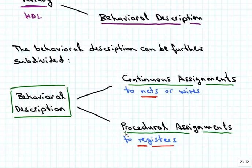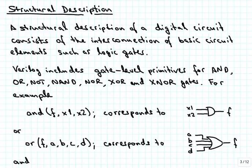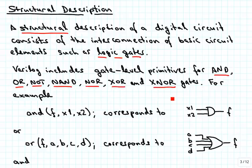Having worked directly with gates and looked at simple examples of making or synthesizing logic circuits, the structural description is probably the most intuitive and most obvious in the beginning. The structural description of a digital circuit consists of the interconnection of basic circuit elements such as logic gates. Verilog includes gate level primitives for all important types of gates: AND, OR, NOT, NAND, NOR, XOR and XNOR. There are also buffer gates, for example, but we will not look at those at this point in time.